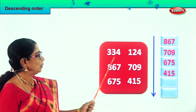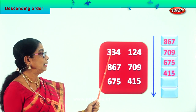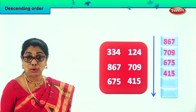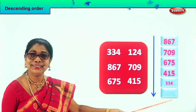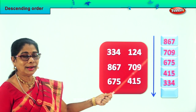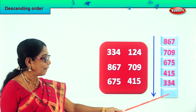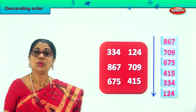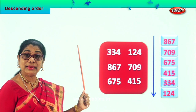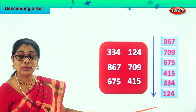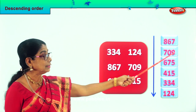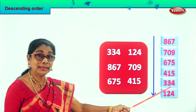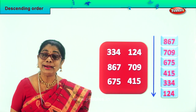Good. Now we just have two numbers — three hundred and one hundred. Three hundred thirty-four is the next small number, so we put it over here. Good. And the last number is one hundred twenty-four — that will come right down here. What did you do? Arranging the numbers in descending order. Read aloud: eight hundred sixty-seven, seven hundred nine, six hundred seventy-five, four hundred fifteen, three hundred thirty-four, and one hundred and twenty-four.